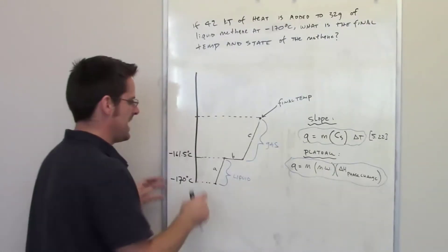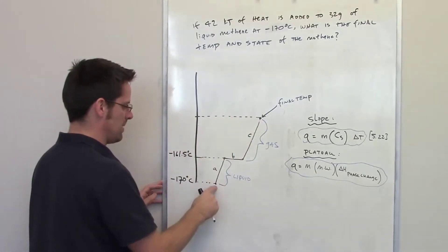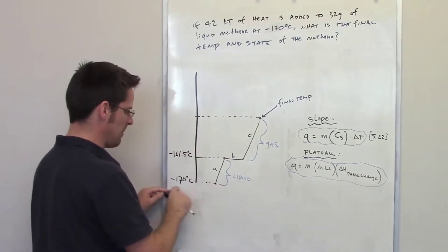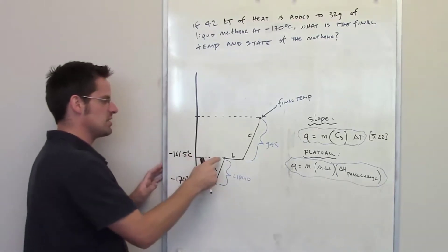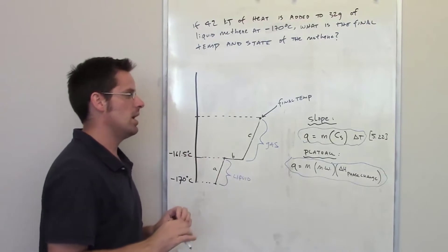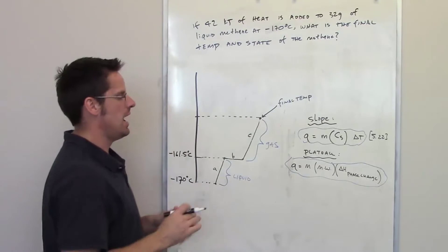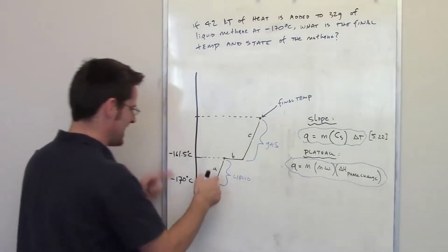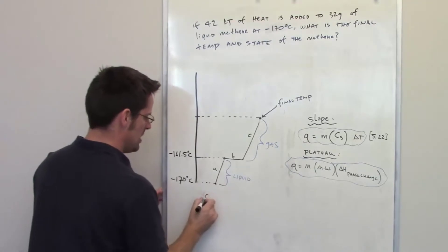Here's the deal. What I need to do is determine how much heat is going to be required to take my 32 grams of methane and warm it up from negative 170 to negative 161.5. That is the actual temperature where methane starts to evaporate or turn from a liquid into a gas at one atmosphere pressure. I'm going up a slope, so I'm going to use my slope equation.